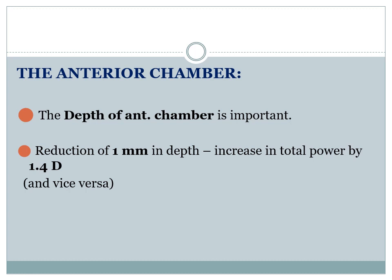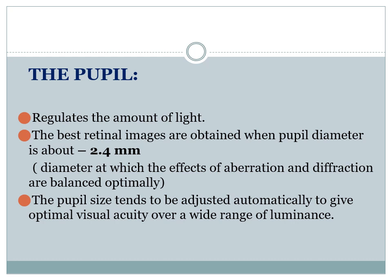Regarding the anterior chamber, its depth is important. A reduction of 1 mm in depth increases the total power by 1.4 diopters, and vice versa — increasing the depth by 1 mm decreases the total power by 1.4 diopters.